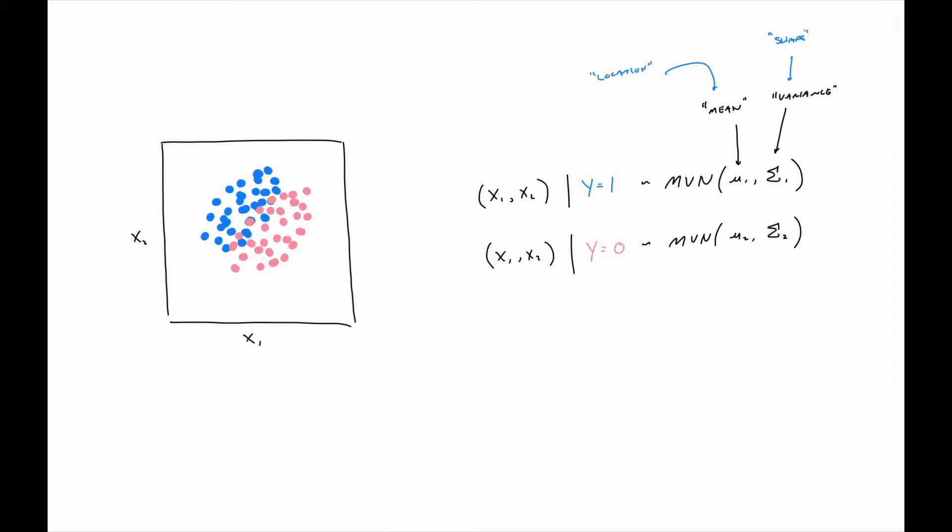So the variance controls the shape of the blob around the location of the blob. I know blob is a very non-technical term, but it's very useful. And then we can do the same thing conditioned on y equals zero, that is, the pink points. So we can say, well, these also follow multivariate normal, but with a different location parameter and a different shape parameter.